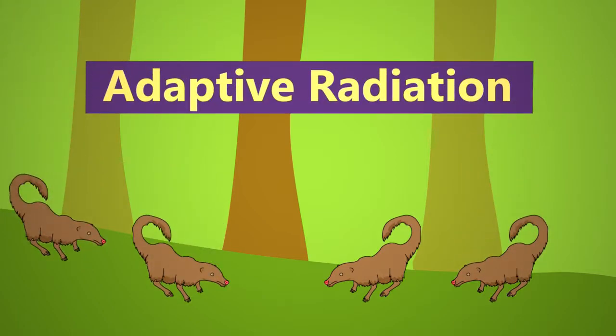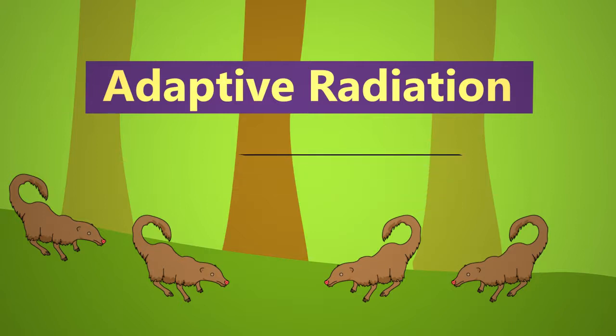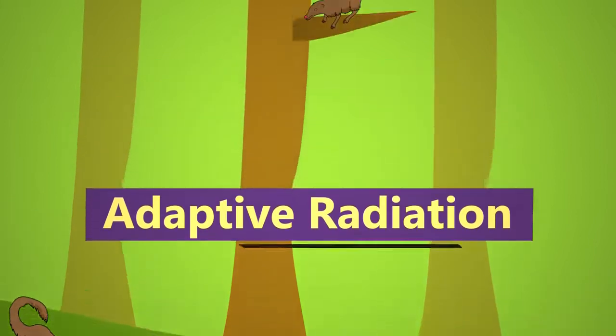During this time, mammalian evolution really got going and the first primates called protoprimates appeared. Look at these first primates. They remind us of squirrels and it is believed that they lived mostly in trees.